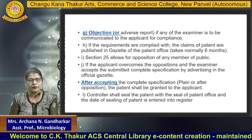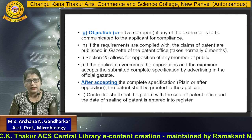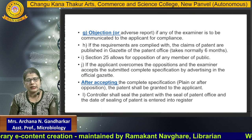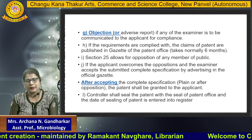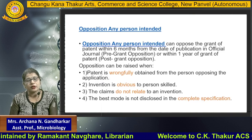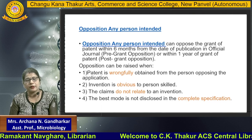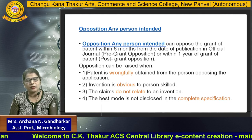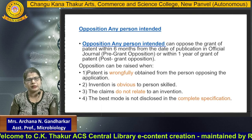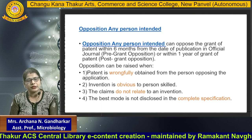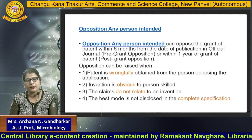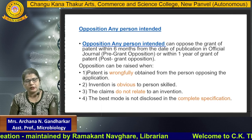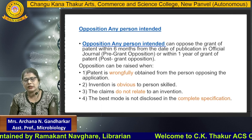You can be objected to by any party. After accepting the complete specification, if there is no opposition or the opposition is overcome, the patent shall be granted to the applicant, and the controller shall seal the patent with the seal of the patent office. The date of sealing is entered into the register. Opposition can be raised by an aggrieved person within six months from the date of publication in the official journal — that is pre-grant opposition — or within one year of the grant of the patent — which is post-grant opposition. Opposition can be raised when the patent was wrongfully obtained, the invention is obvious in nature, the claims do not relate to the invention, or the best mode is not disclosed in the complete specification.